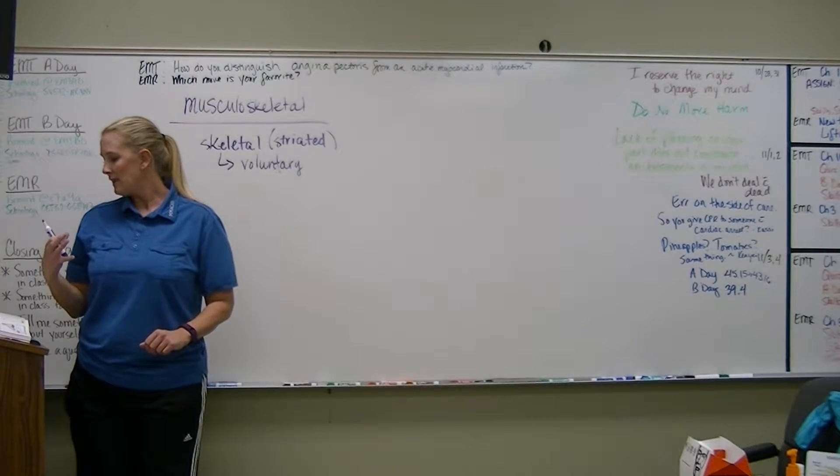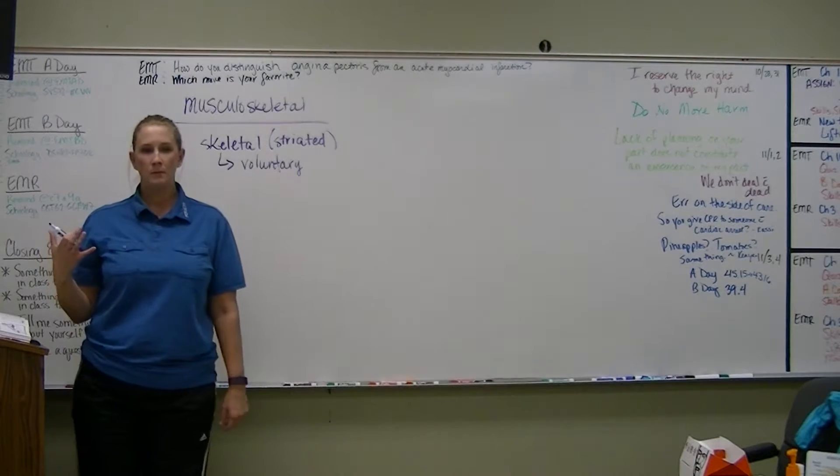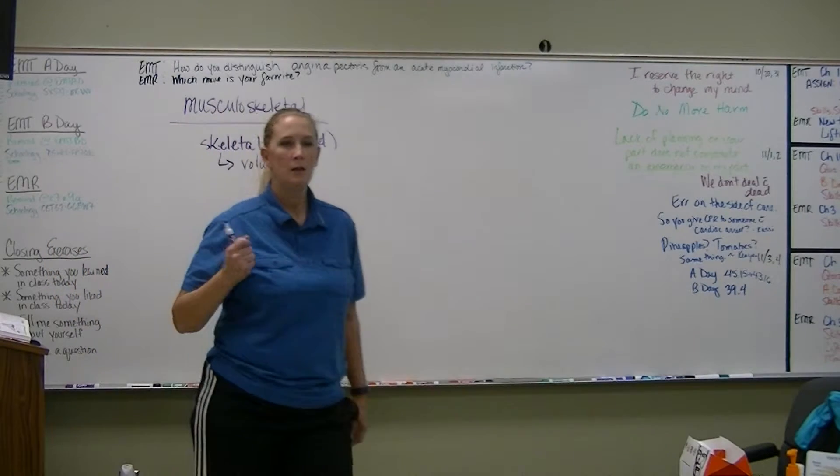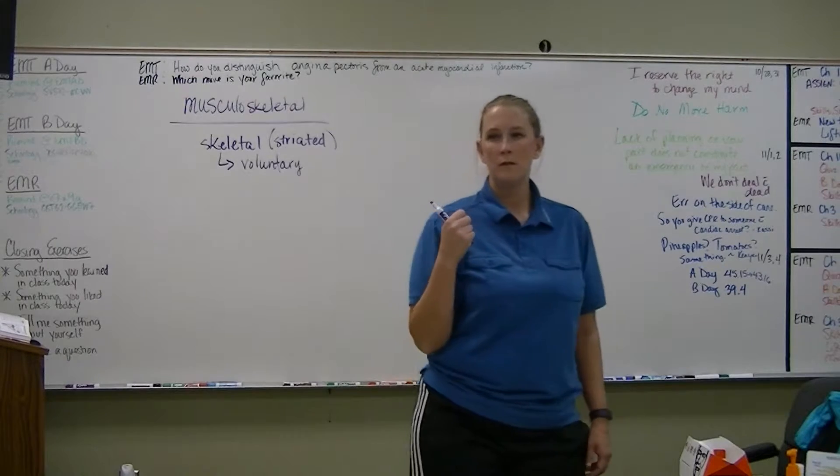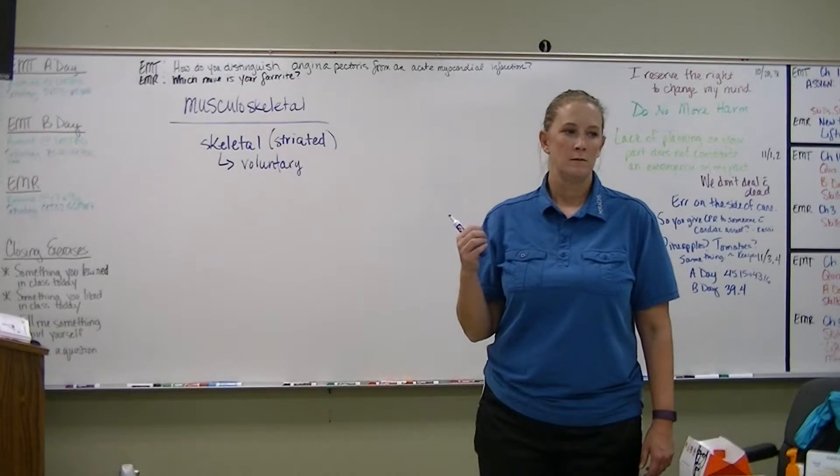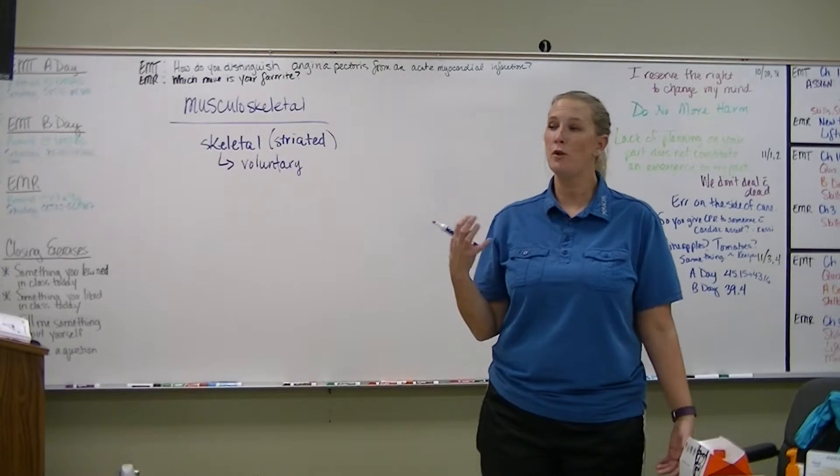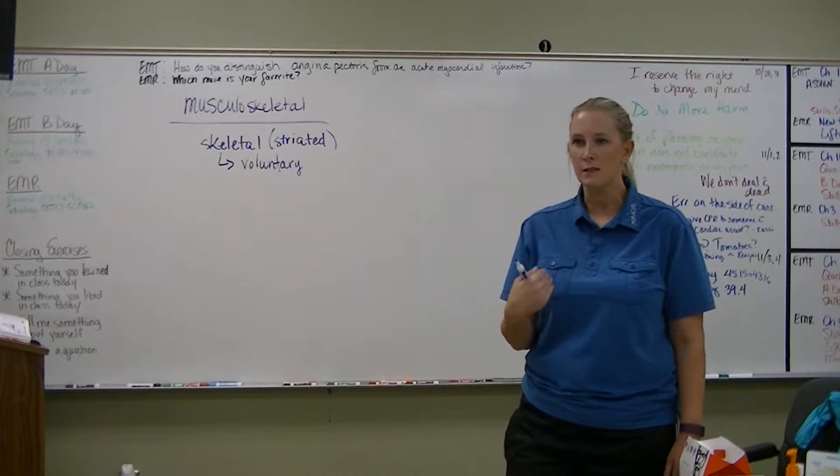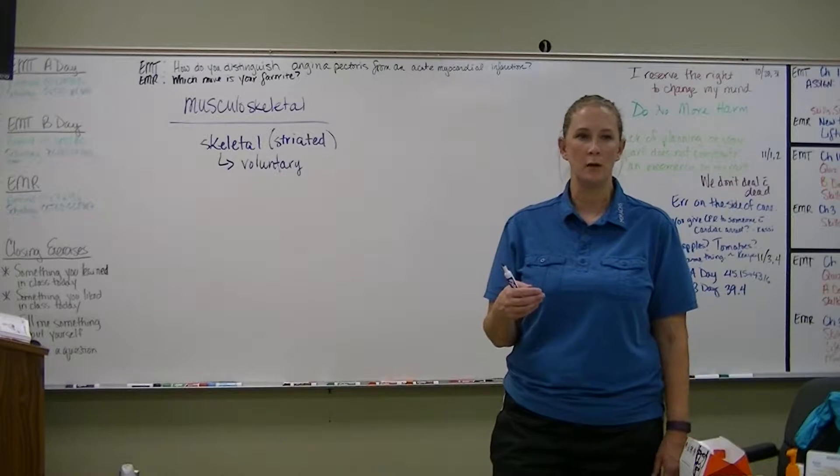If you have a muscle that is involuntary, your heart. Your heart's an involuntary muscle. Cardiac muscle's involuntary. What does that mean? It moves by itself, or you don't get a choice. You don't really have a choice in peristalsis, right? Peristalsis happens whether you want it to or not.